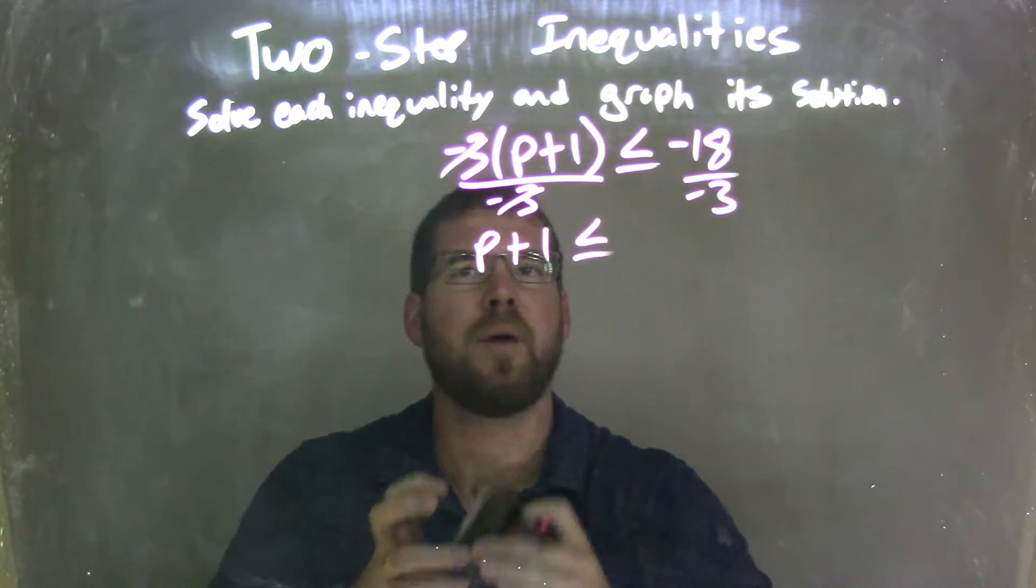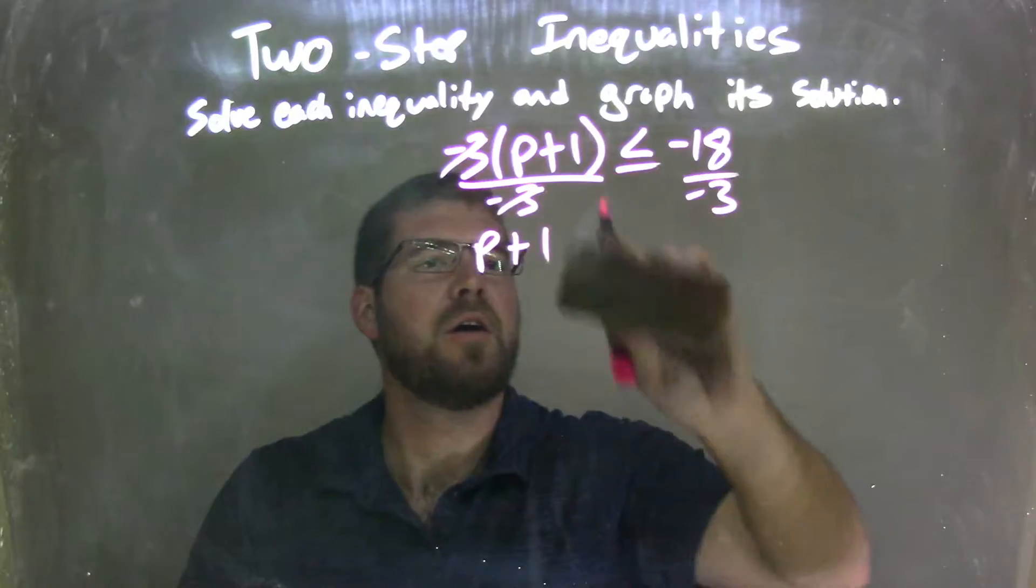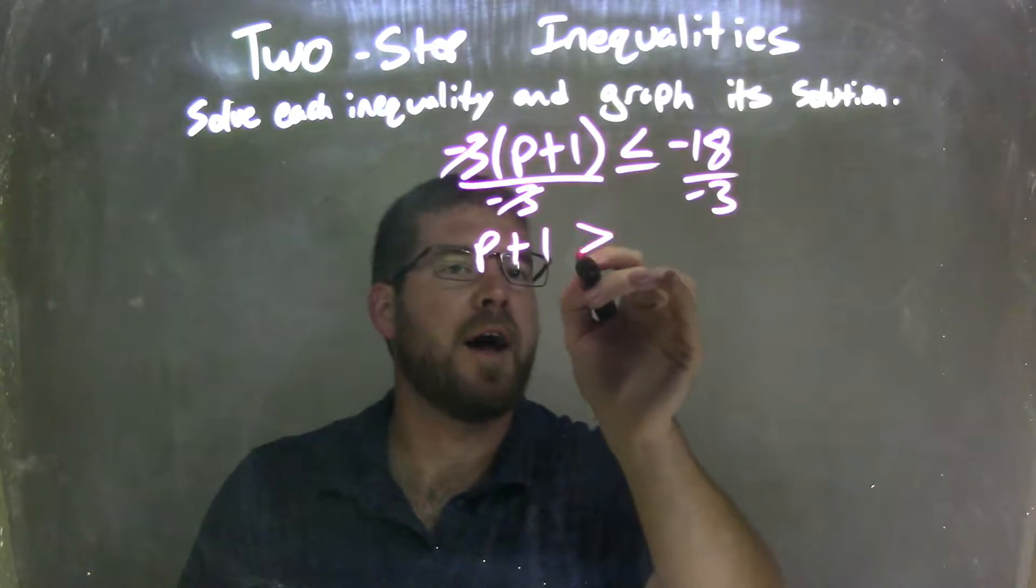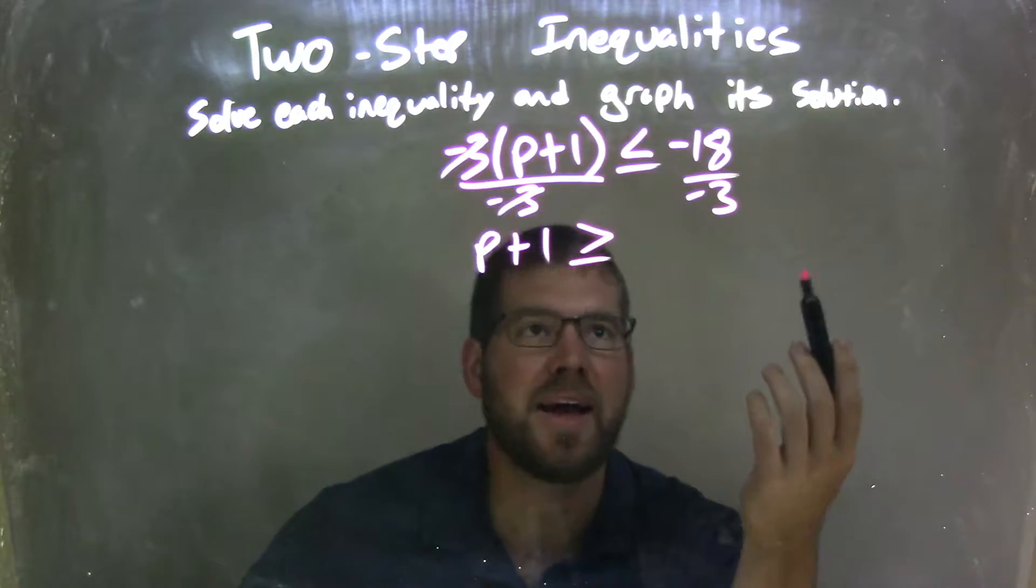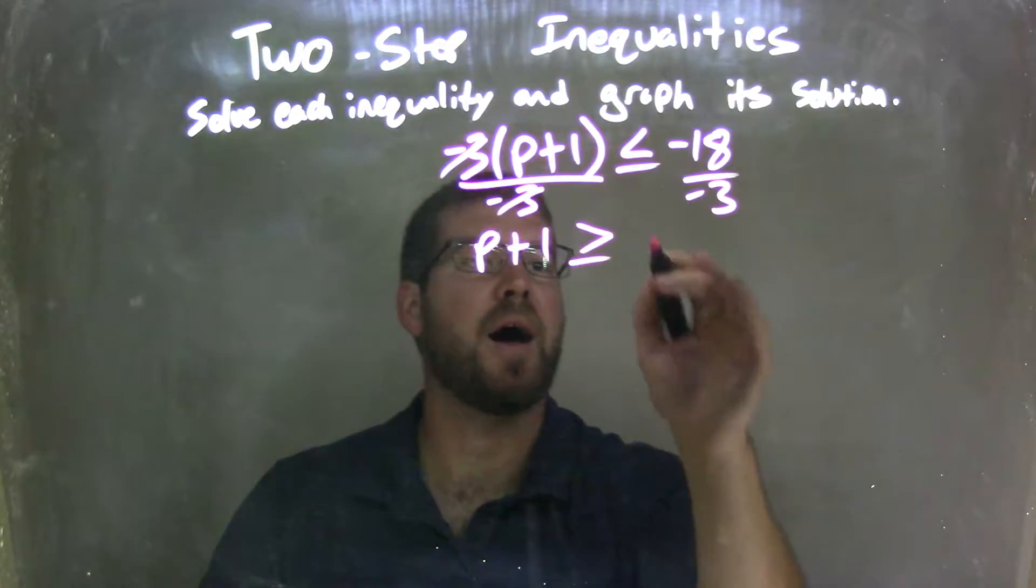And now, oh, I made a little mistake. If I'm dividing over an inequality, I need to flip the sign. So it goes from less than or equal to, to greater than or equal to. And negative 18 divided by negative 3 is positive 6.